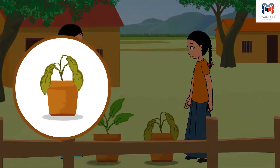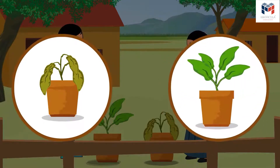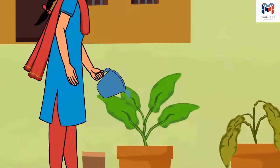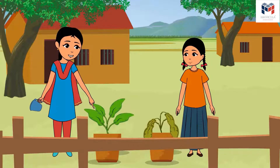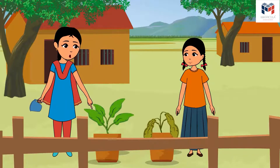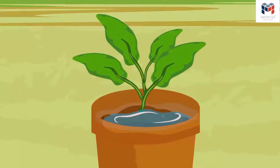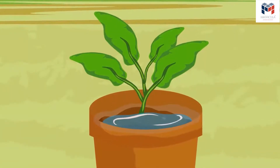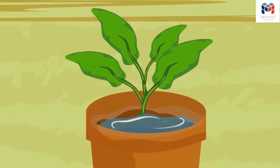The girls first water Nilu's pot and then Minu's pot. 'Look Minu, the water is seeping slowly into the soil. Some water is still in the pot — it will slowly seep in.'